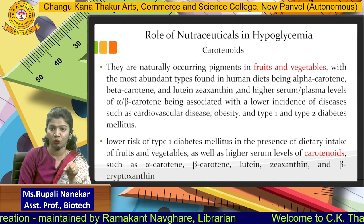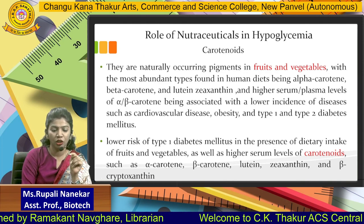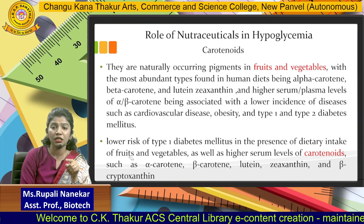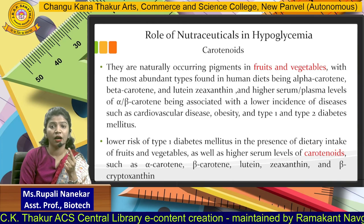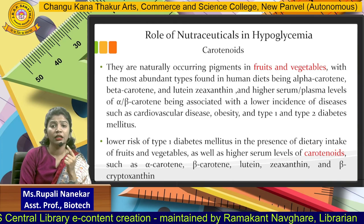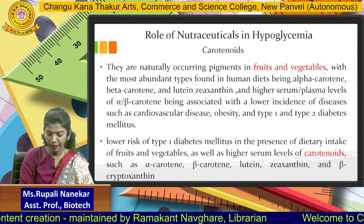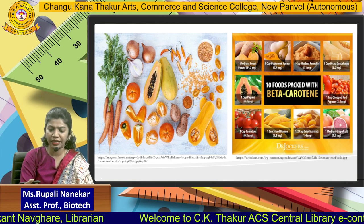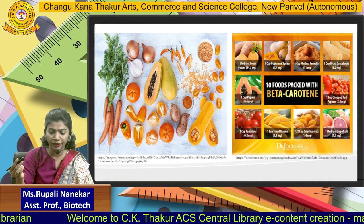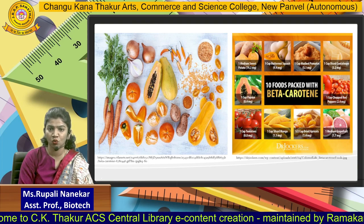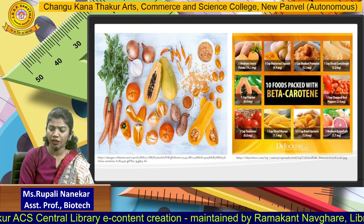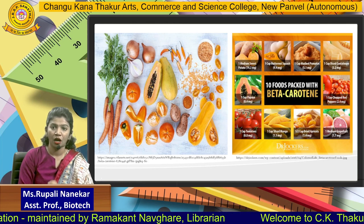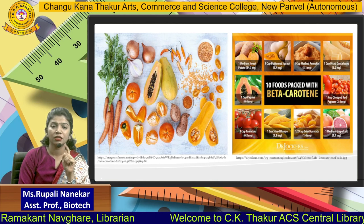Nutraceuticals play a very important role. They are looking at lowering the risk of type 1 diabetes mellitus through dietary intake. If you have a good dietary intake of fruits and vegetables, your high serum levels of carotenoids — such as alpha-carotene, beta-carotene, lutein, and beta-cryptoxanthin — can help lower your diabetes risk. You can see on your screen many colorful foods and vegetables with pigments. On a day-to-day basis we can have pumpkin, chopped red bell peppers, papaya, tomatoes, onions, carrots, apricots, and mango. These are nutritionally packed foods that can help reduce diabetes.